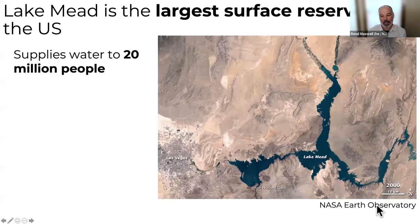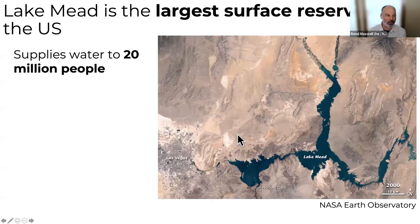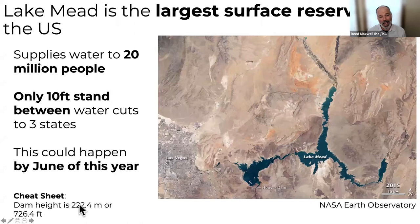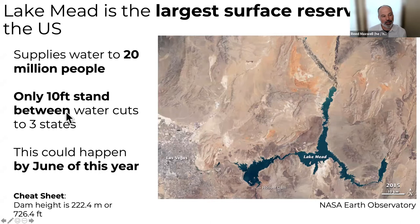This is Lake Mead in happier times — a satellite photo from 2000. Lake Mead supplies water to about 20 million people. What many people are not aware of is this is Lake Mead more currently. The Western U.S. is in severe drought, and only 10 feet of lake level stand between historic water cuts to three states, which could happen as early as June of this year. Hoover Dam is 224 meters or 726 feet high, so 10 feet is pretty small by comparison.